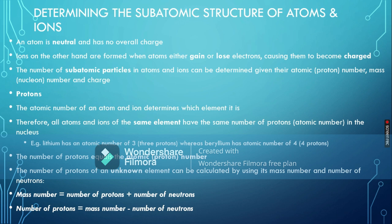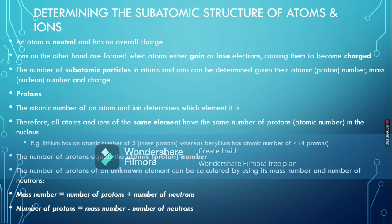Let's talk about protons first. The atomic number of an atom or ion determines which element it is — it is essentially the fingerprint of the atom, telling you how many protons are present. Therefore, all atoms and ions of the same element have the same number of protons. Whether it is a lithium atom or a lithium 2+ or 3+ ion, it will have the same number of protons in the nucleus, determined from the atomic number.